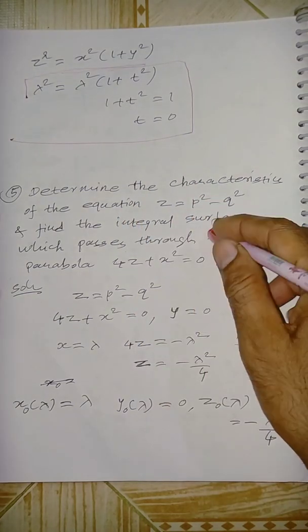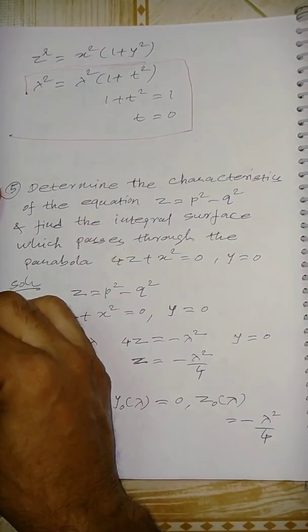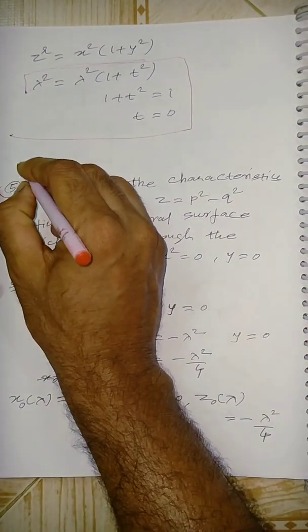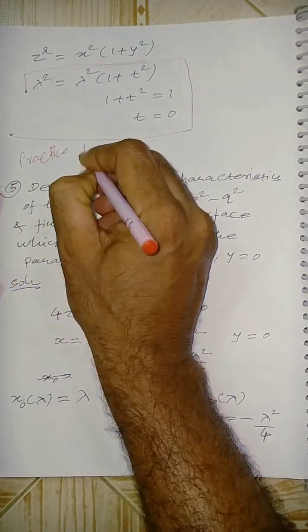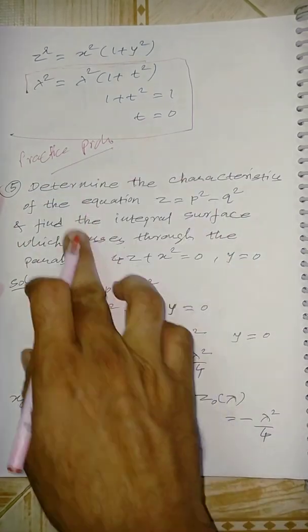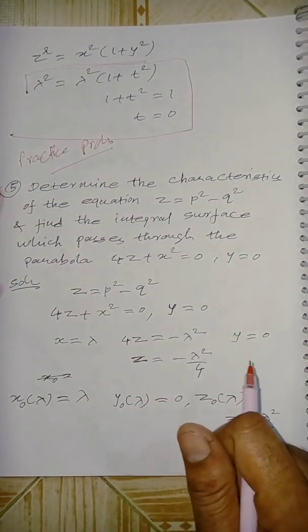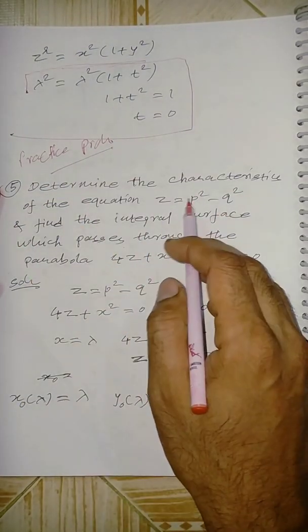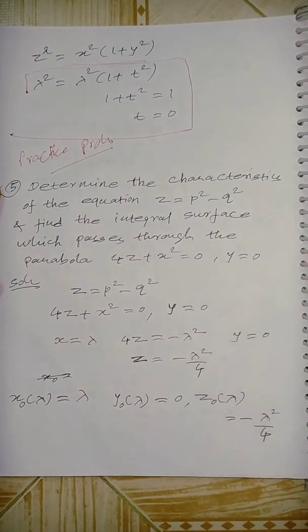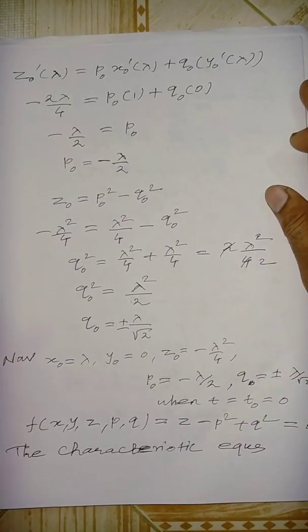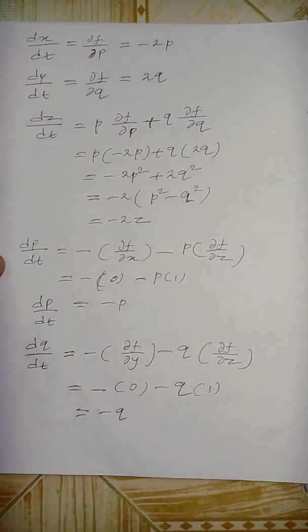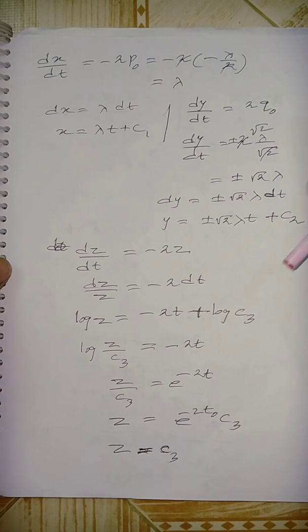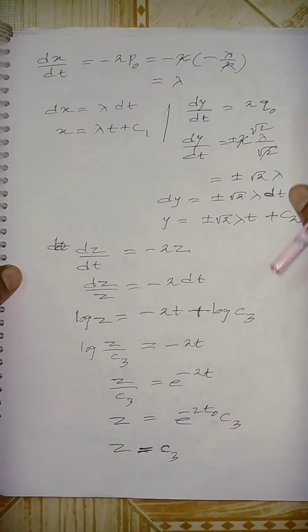Now the last fifth problem: take this as a practice problem. Solve using the character equations with p, q, z following the same working rule procedure, and get the answer in terms of x, y, z.